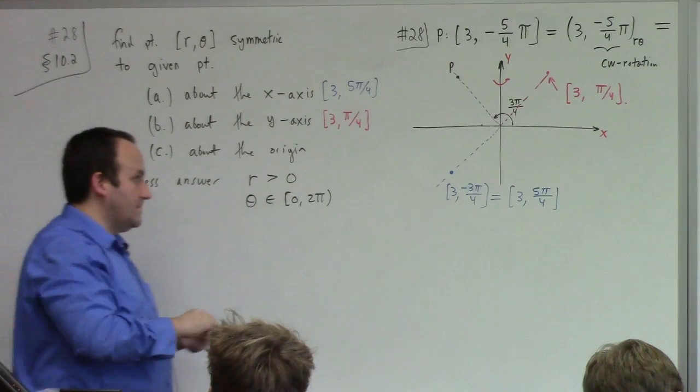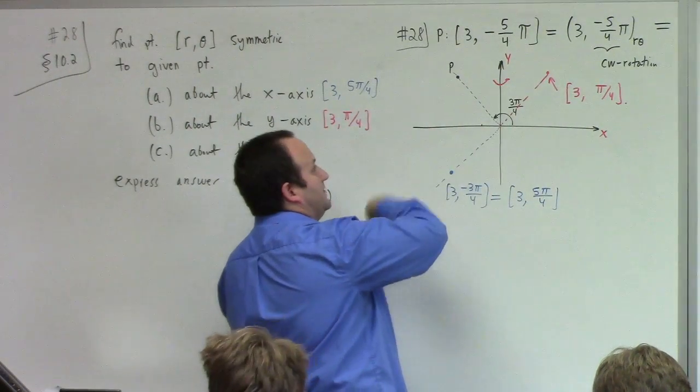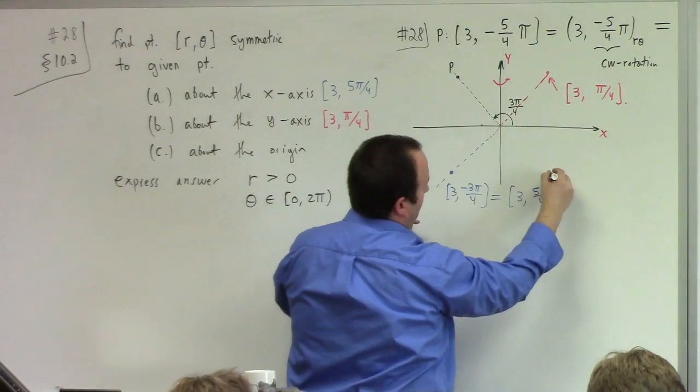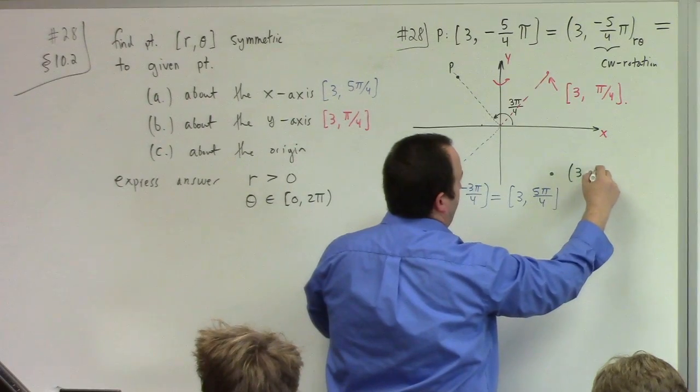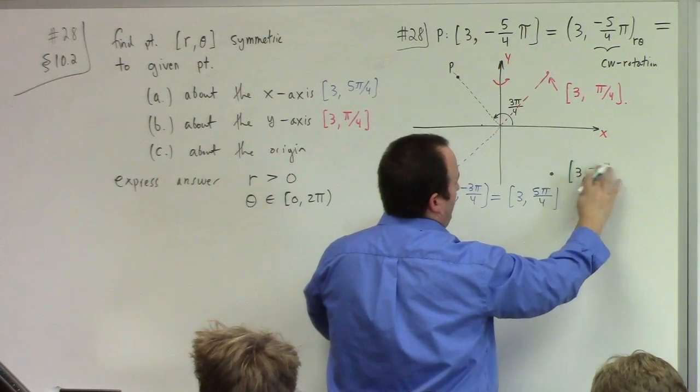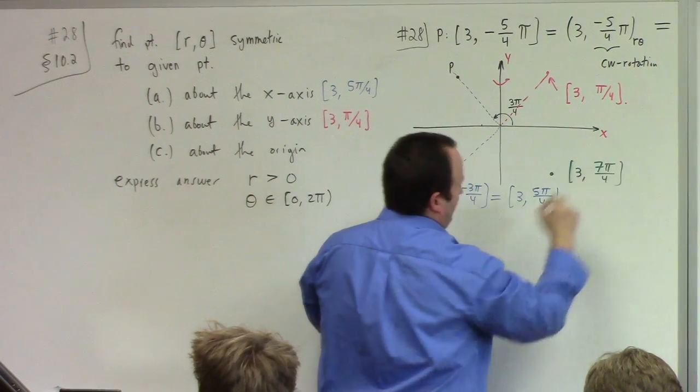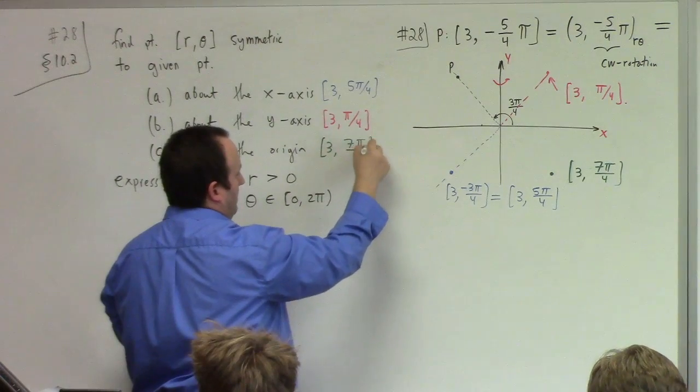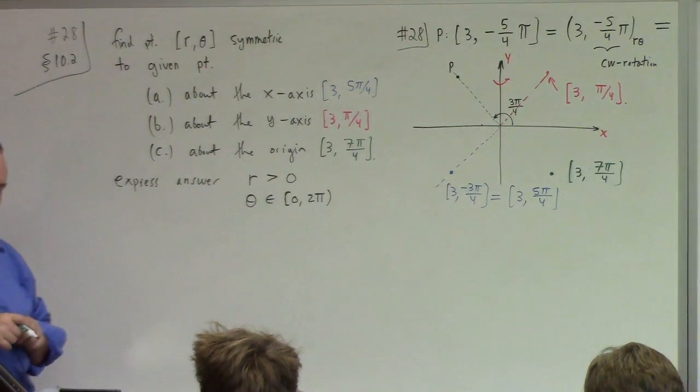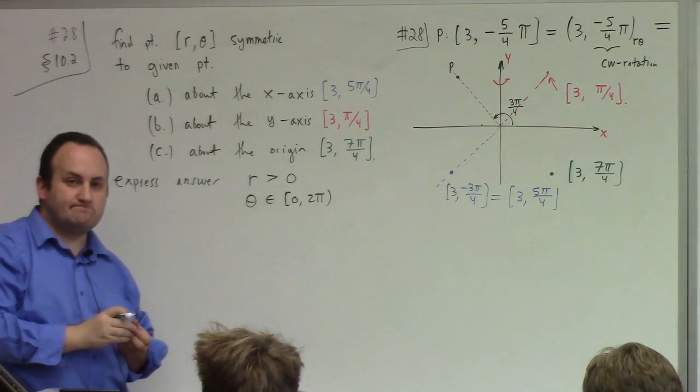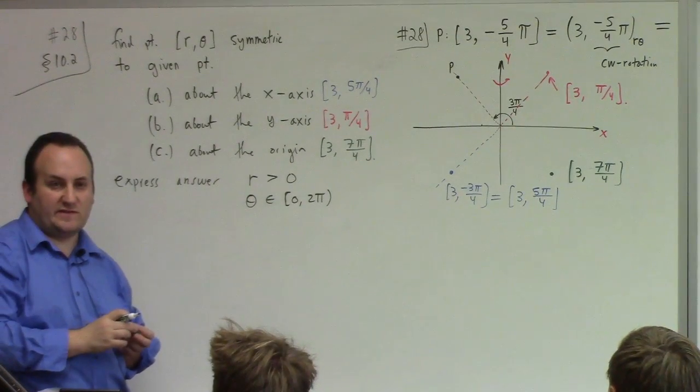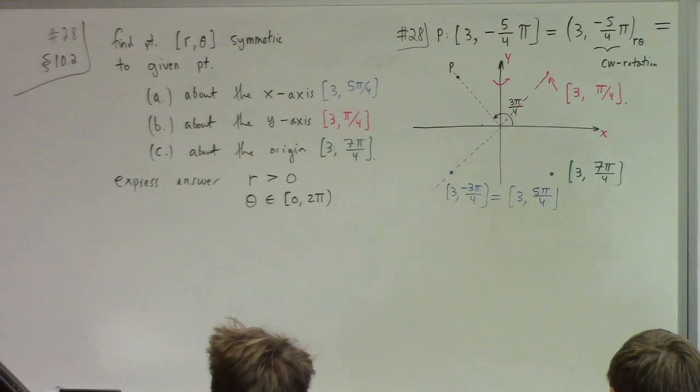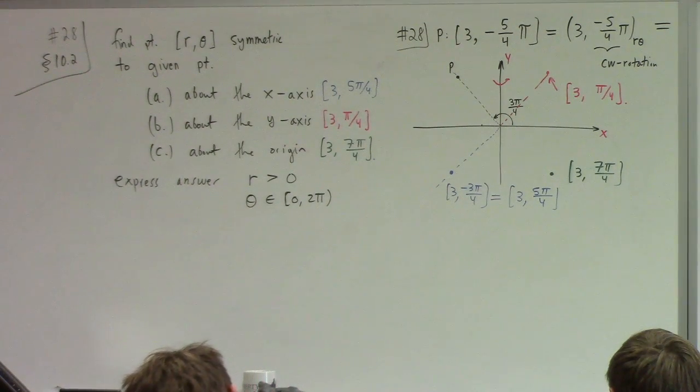How about the origin? So, the origin, you just basically invert. You take p to minus p, so it just basically flips it over, like here. So that would be 3, and then, yeah, 7 pi over 4. I was about to say minus pi over 4, but you guys beat me to it. Fine. I'll accept your 7 pi over 4.